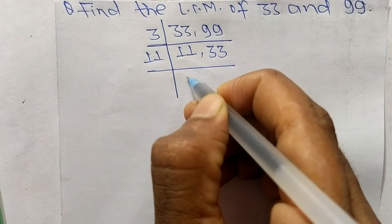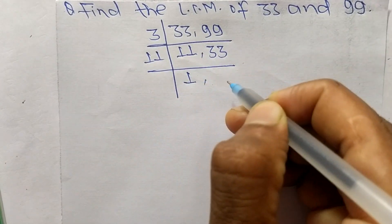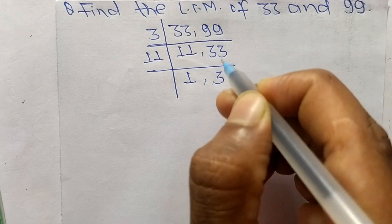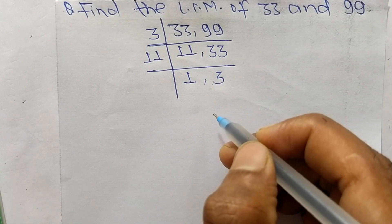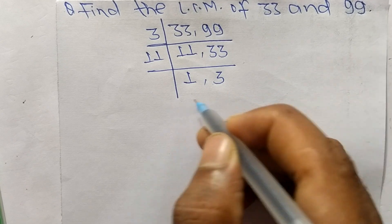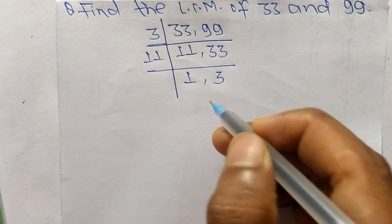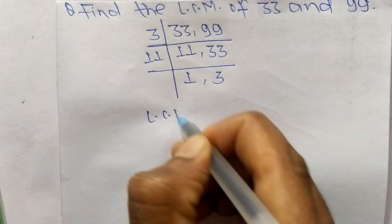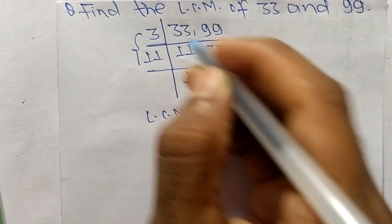11 times 1 means 11, 11 times 3 means it is 33. At last we have 1 and 3 which are not exactly divisible by the same number, so its LCM is equal to, from this part we have 3 and 11.